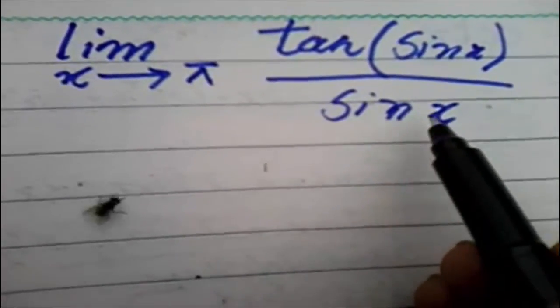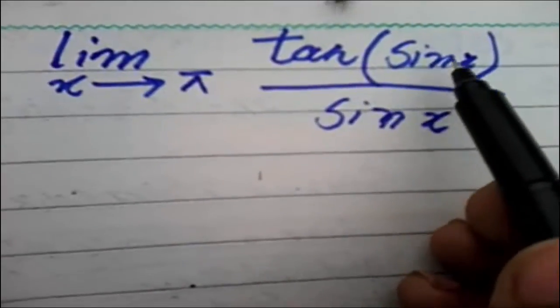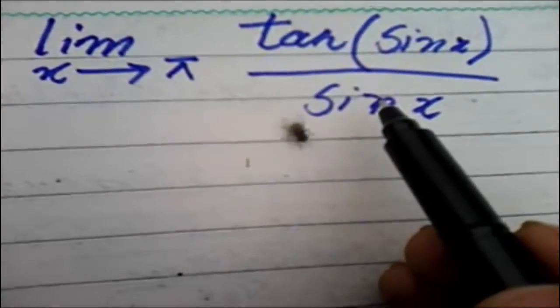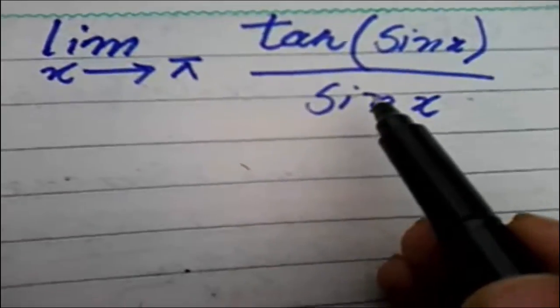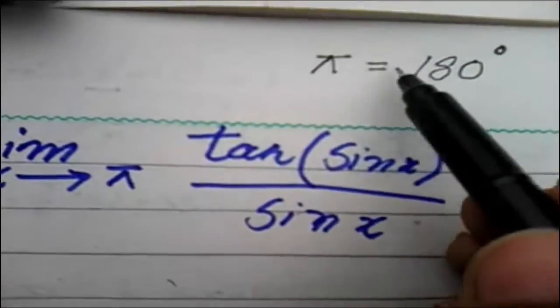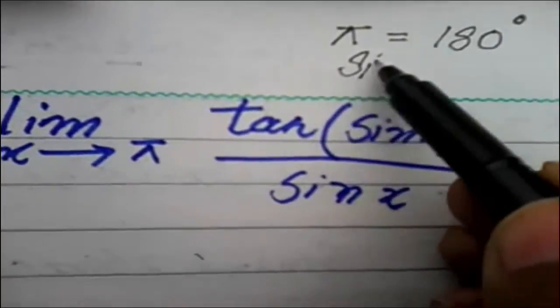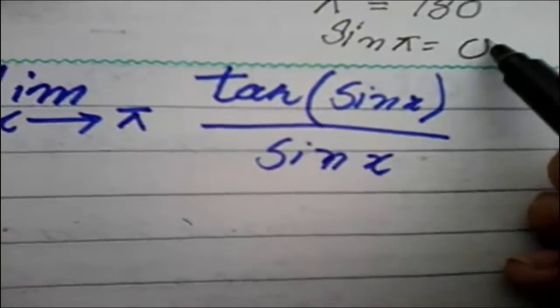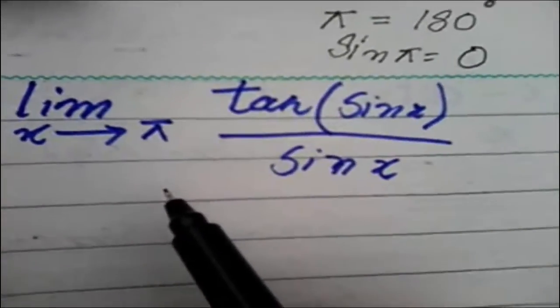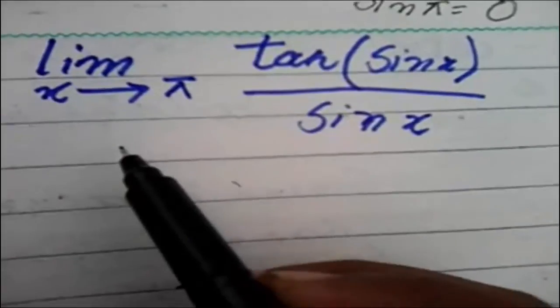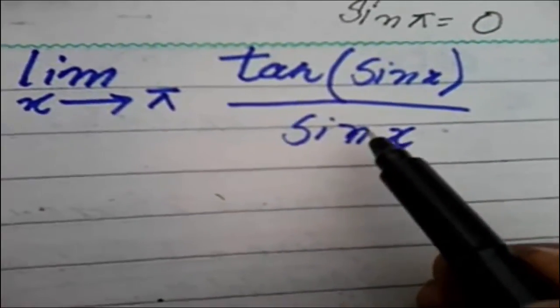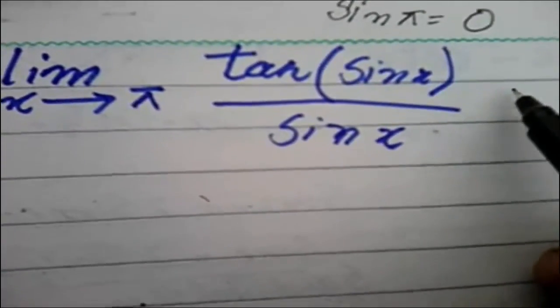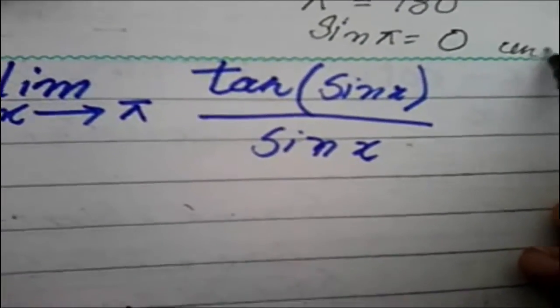Let's see: when we put a value of π for x, it becomes sin(π), which means sin(180°). And here is also sin(180°). But sin(180°) is equal to zero. You can find it with your calculator. So when it became zero in denominator, this became undefined.